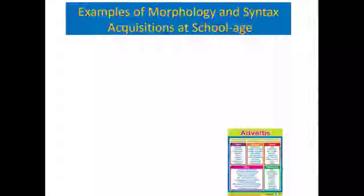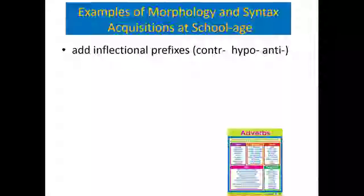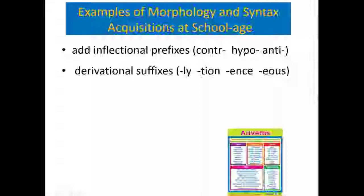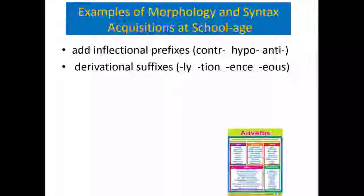Examples of morphology and syntax required during the school-age years include many inflectional prefixes — contra, hypo, anti, dis, mis, un — dozens that need to be understood and recognized. More derivational suffixes change one part of speech into another, making language very efficient. For instance, the adjective 'quick' becomes the adverb 'quickly' by adding a morpheme, or the verb 'satisfy' becomes the noun 'satisfaction.' You can use your existing vocabulary but create new grammatical uses of a word if you master the derivational suffix system.